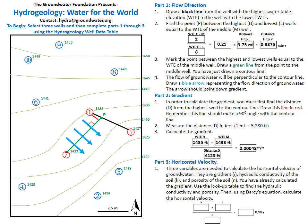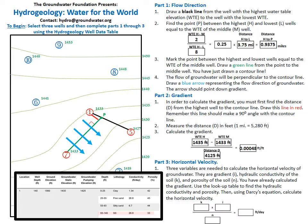We have now completed Parts 1 and 2 of the activity and can move on to Part 3: horizontal velocity. Three variables are needed to calculate horizontal velocity: gradient (I), hydraulic conductivity (K), and porosity (n). You have already calculated the gradient. We can use the hydrogeology well data log to look up the hydraulic conductivity and porosity for the well with the highest water table elevation — well 1 — as that is the well the groundwater will be flowing from.